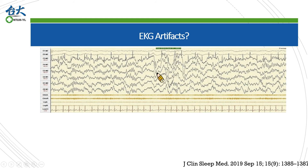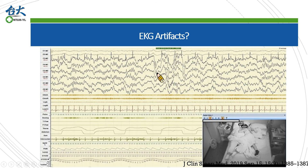Another interesting artifact is demonstrated in this case. In the third phase there is one EKG artifact; however, when we see the last trace shown as EKG, the frequency is not similar. What happened? Actually this is a child polysomnography. Occasionally the parent should sleep together with the child during the exam, and the EKG comes from different subjects in the study.